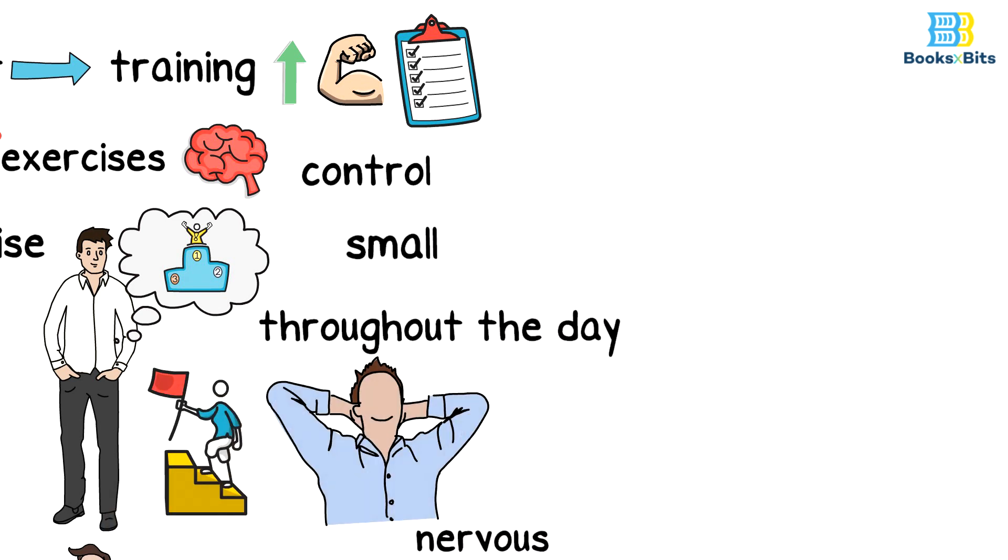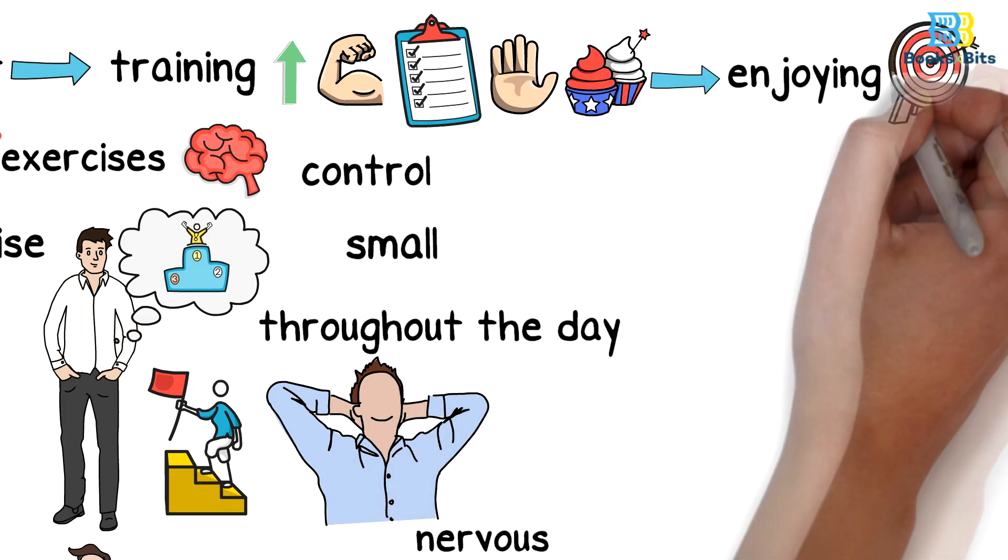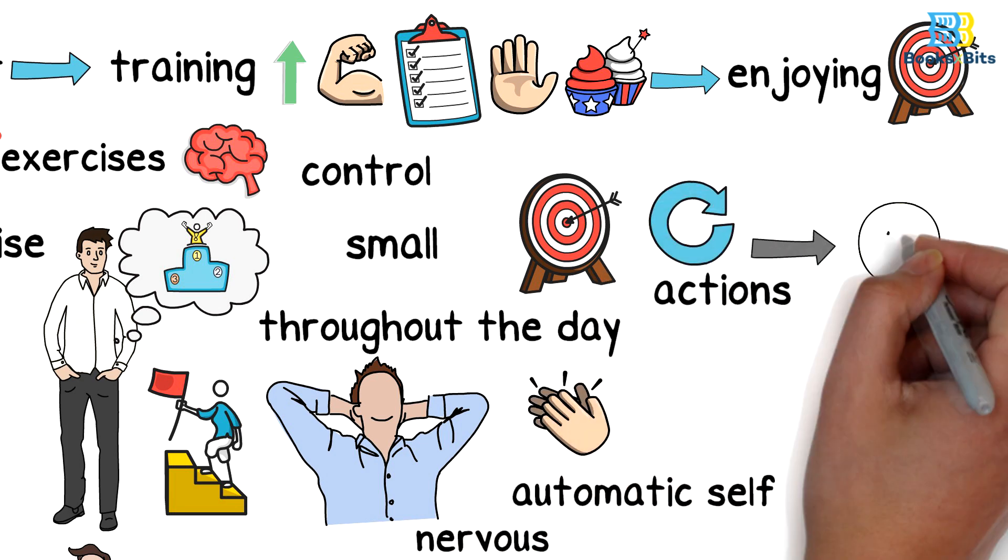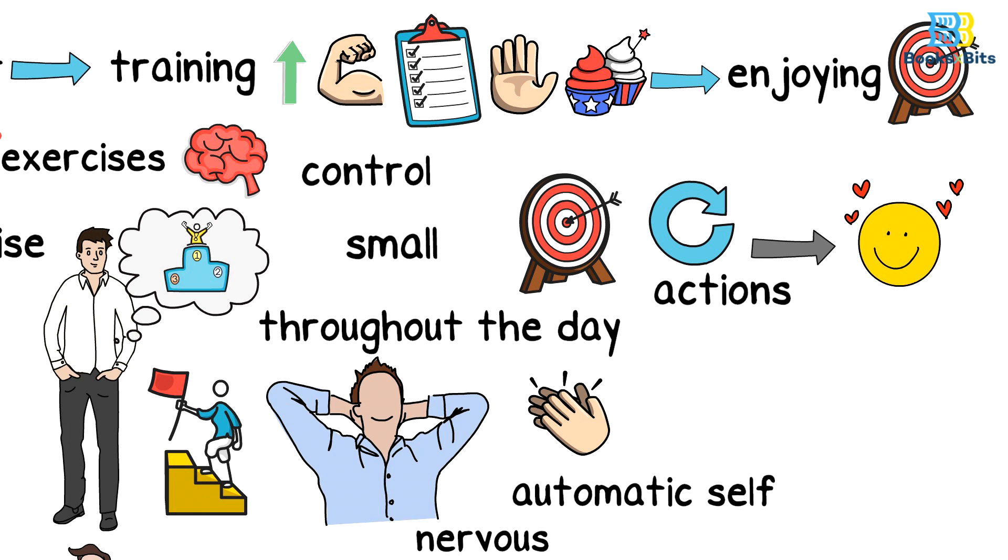You can also practice happiness exercises by imagining your small successes throughout the day, for example, refusing candy, and then enjoying the feeling of achievement, because achievement stimulates the automatic self in repeating the same actions to feel satisfied, as this feeling is considered a reward.